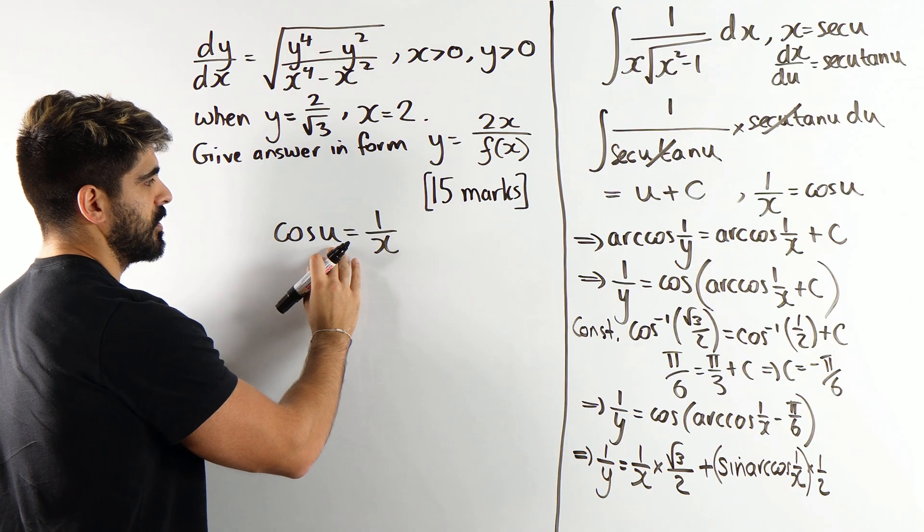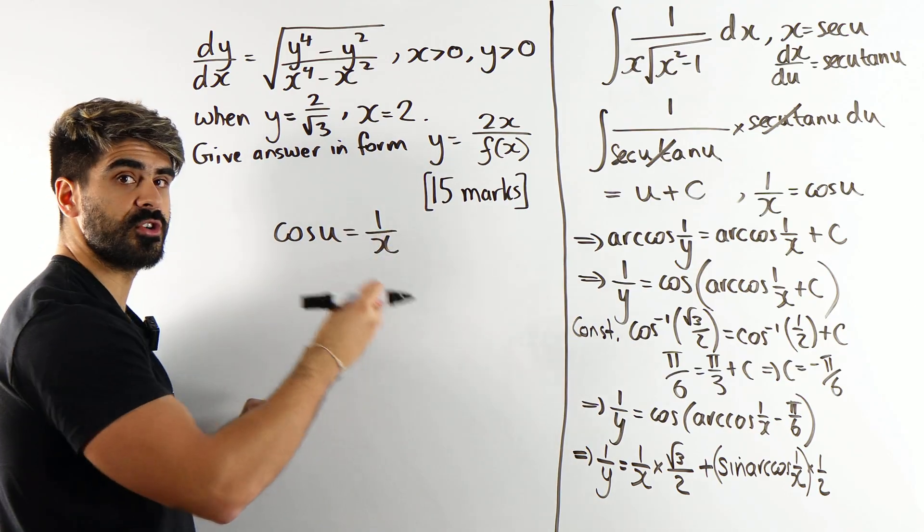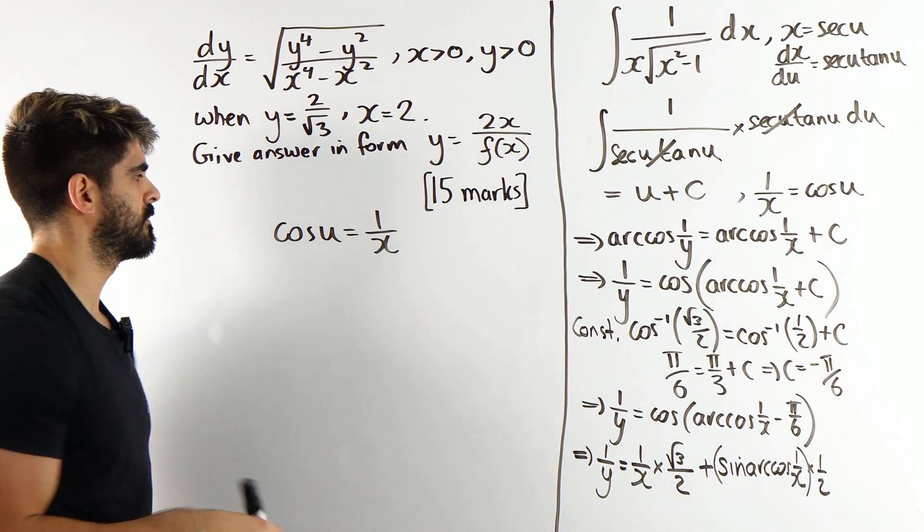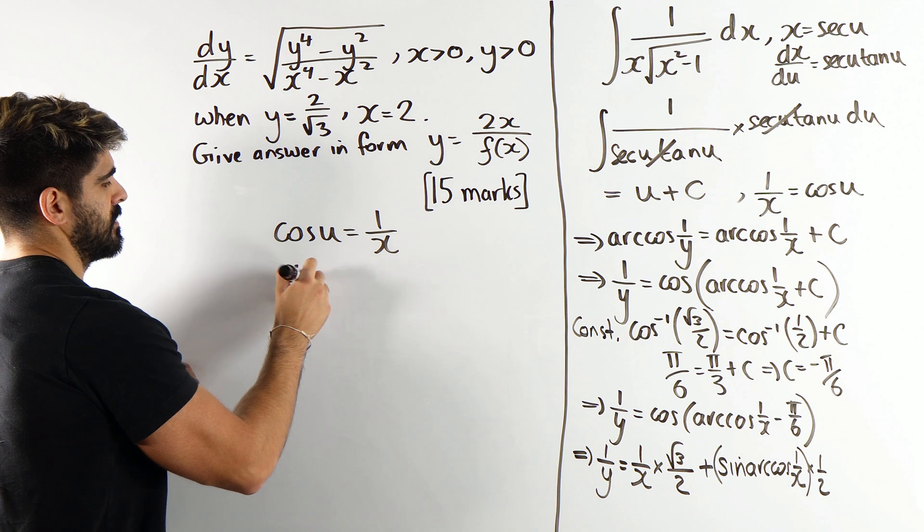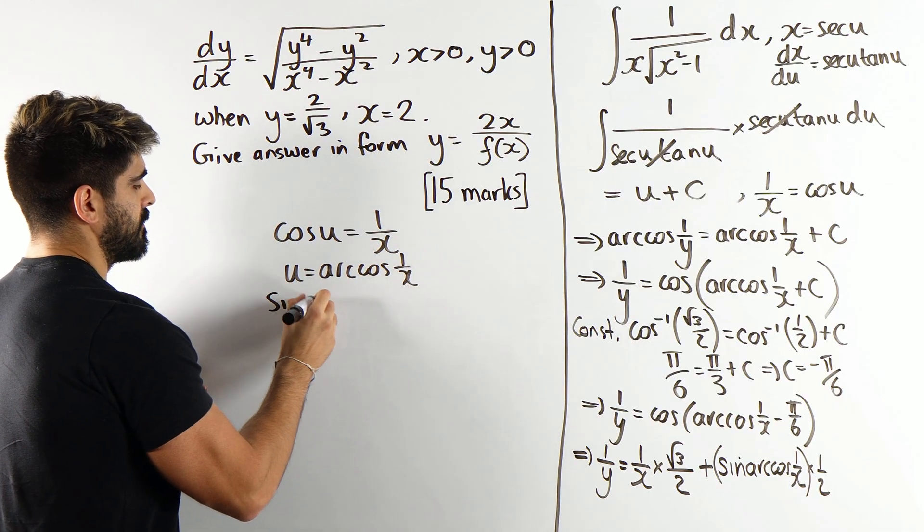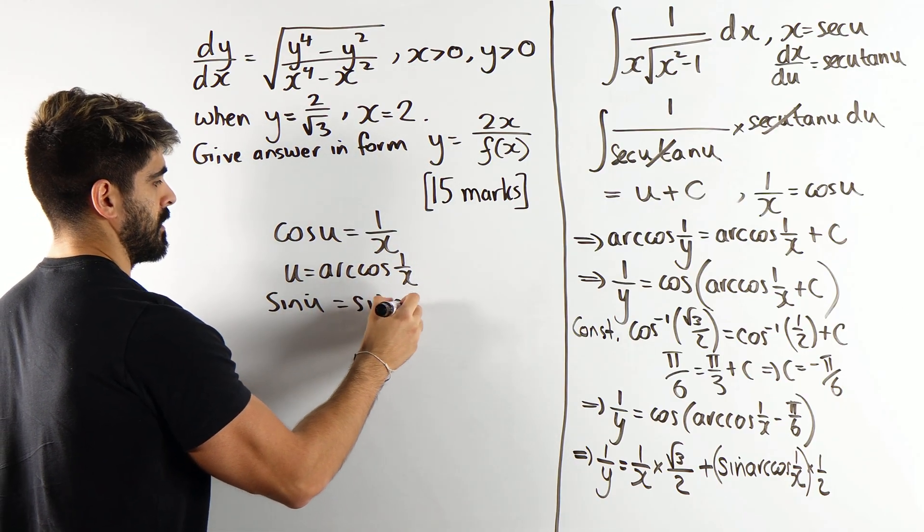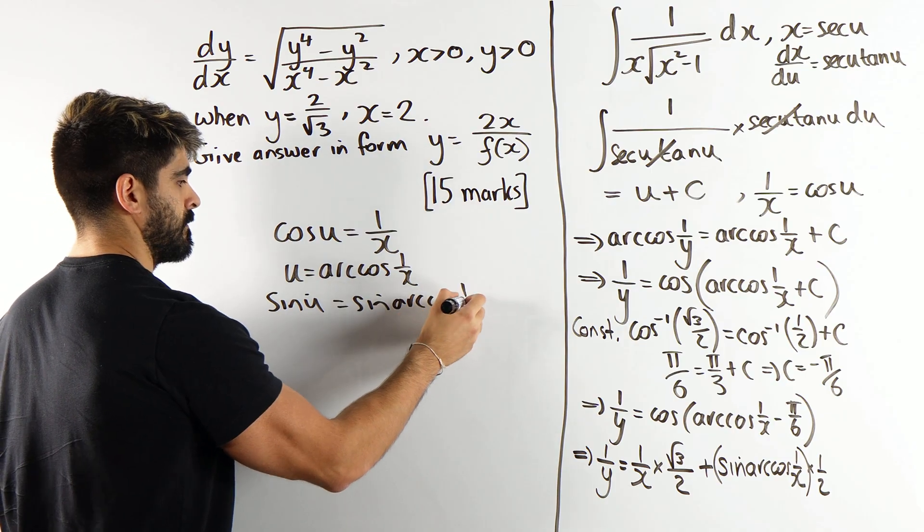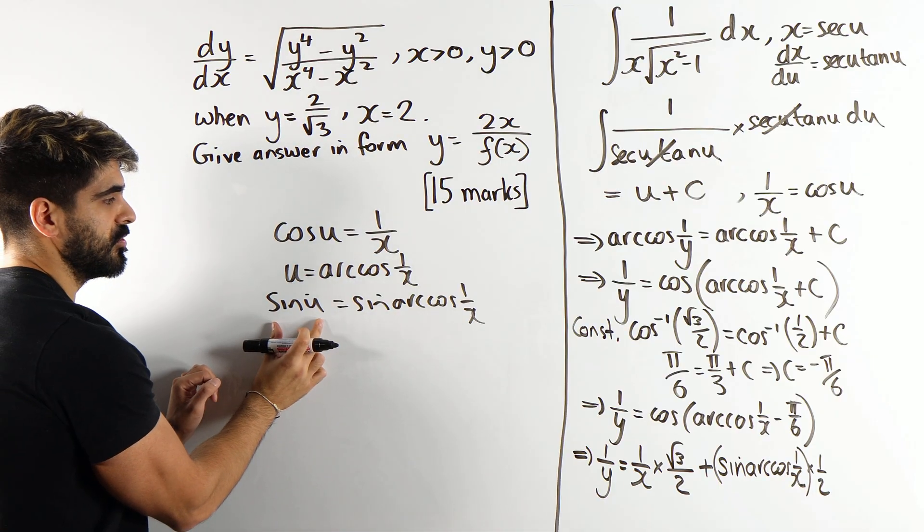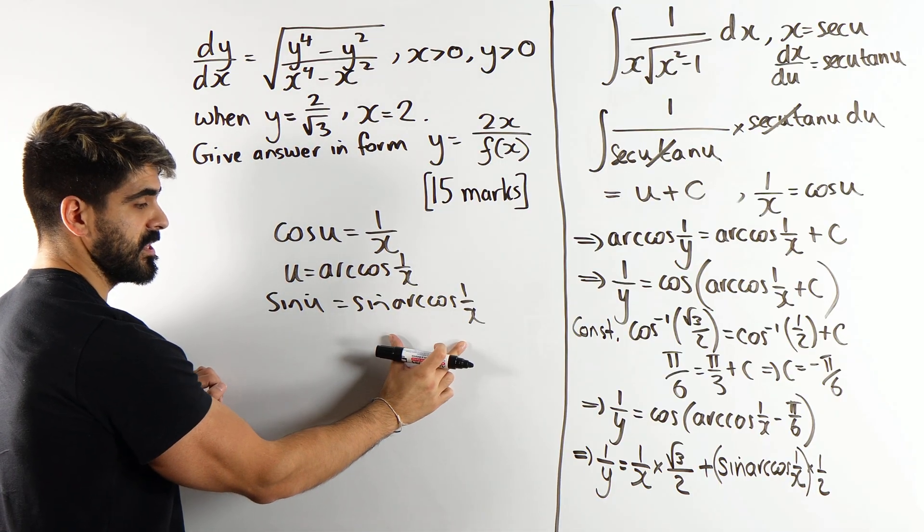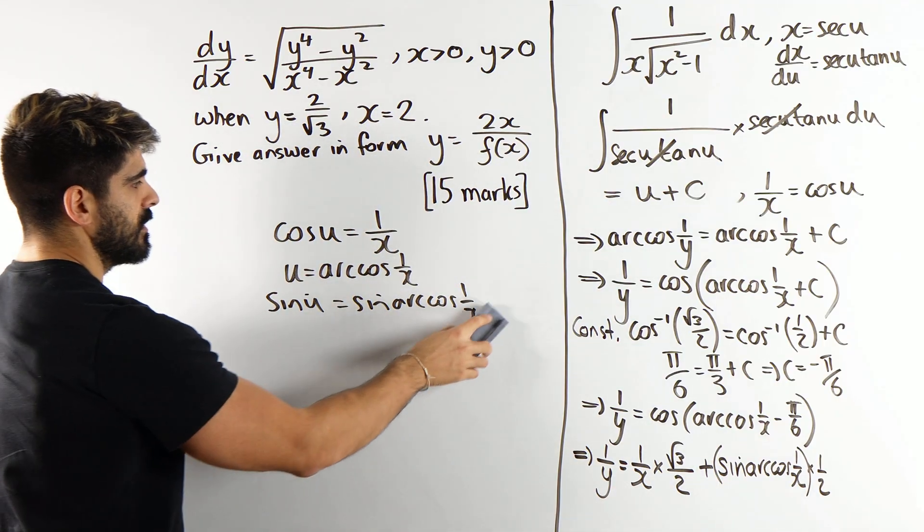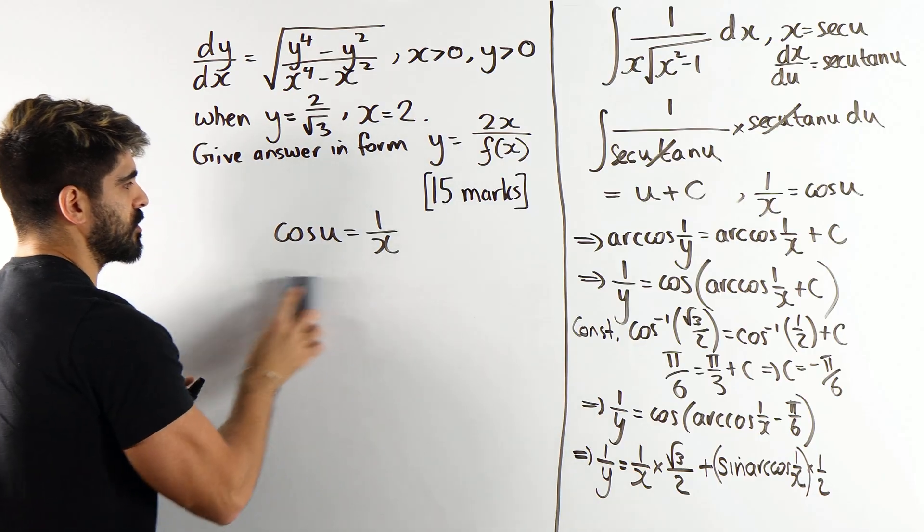So, we want to do sine of that. I have cos u. I want the value of sine u because sine u is just sine of this, which is this. So, cos u is 1 over x. What should we be thinking about? We should be thinking about the right angled triangle. So, the angle is u. Cos is the adjacent 1 over the hypotenuse x. So, the opposite side is x squared minus 1.